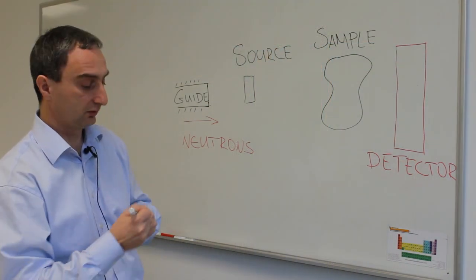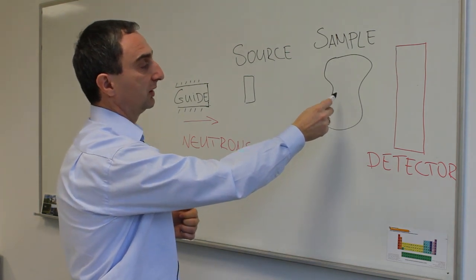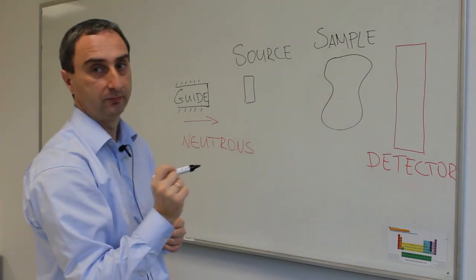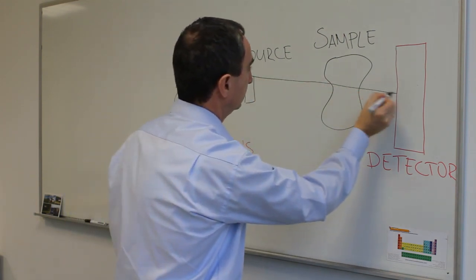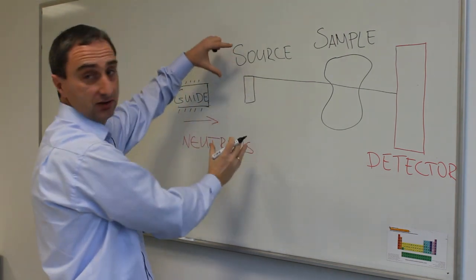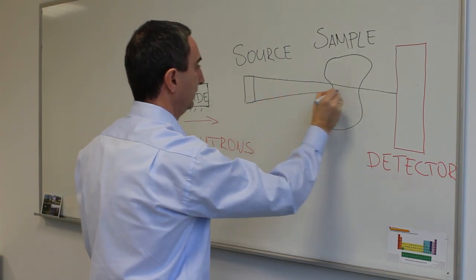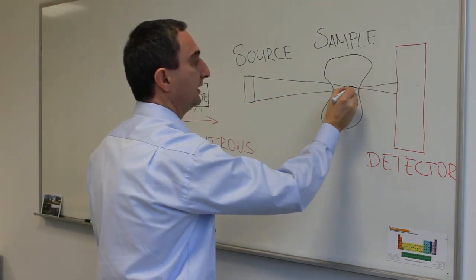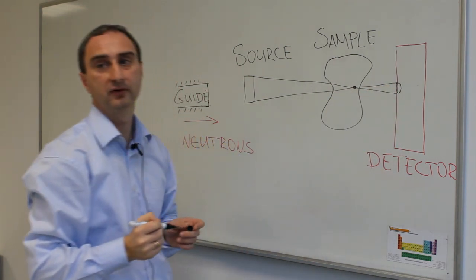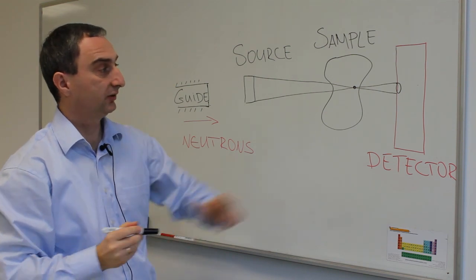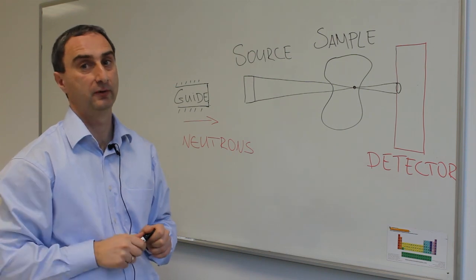This means that if you want to point one or depict one point from the sample on the detector, we'll have something like this, just rays starting from here. But of course, because of the extension of the source, we'll have also a ray coming from the other part. And one point of the sample will be projected as a spot on the detector. This spot is limiting our spatial resolution or the sharpness of our image.